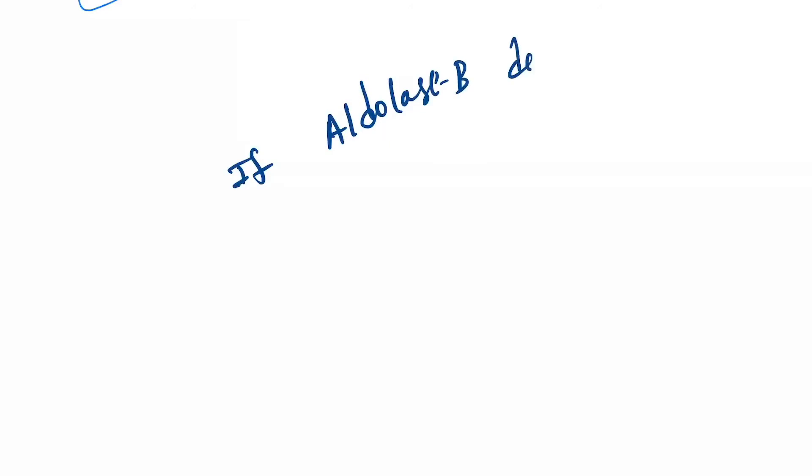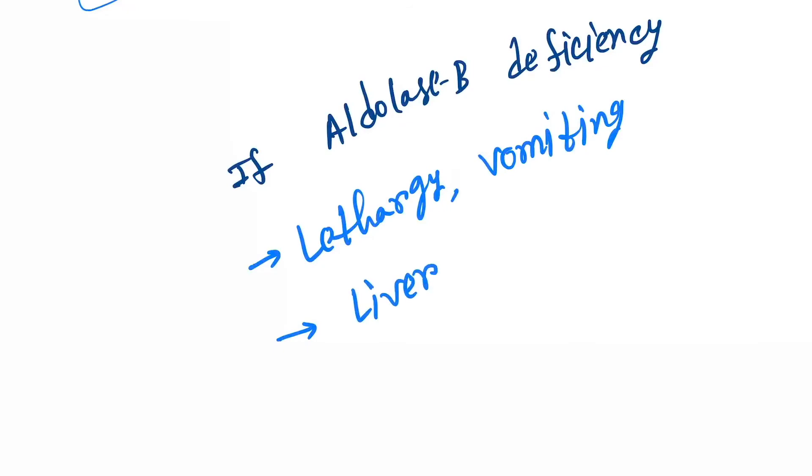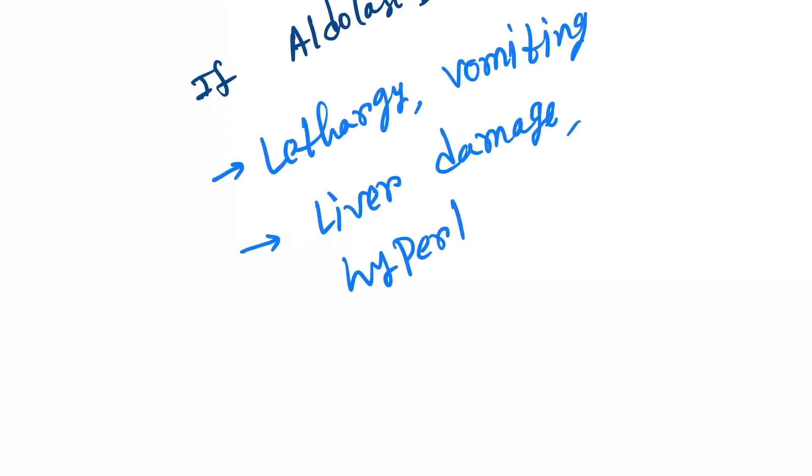If aldolase B deficiency occurs, then there will be lethargy, vomiting, then liver damage. This will cause hyperbilirubinemia and hypoglycemia.